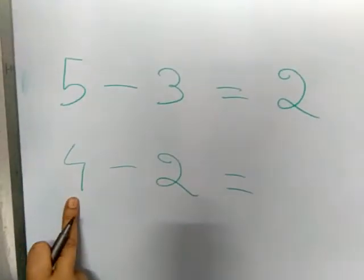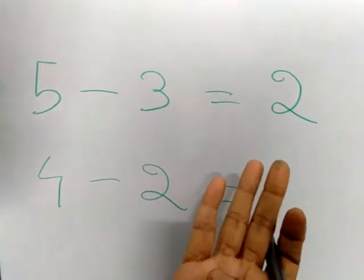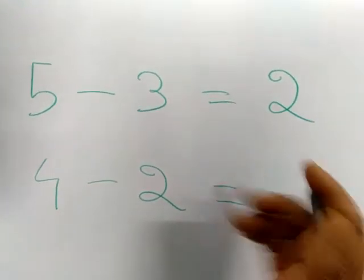And here is 4 minus 2. 2 is the small number. Start counting from 2. 3, 4. Count 1, 2.